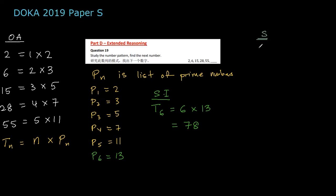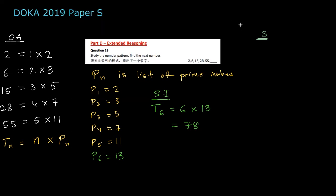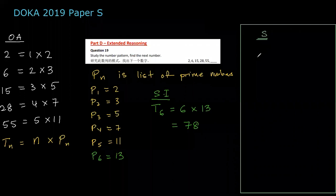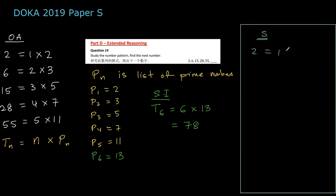We're going to double-check the sequences that we have. So we have 2 equals 1 times 2, if I follow the pattern 6 equals 2 times 3, 15 equals 3 times 5.